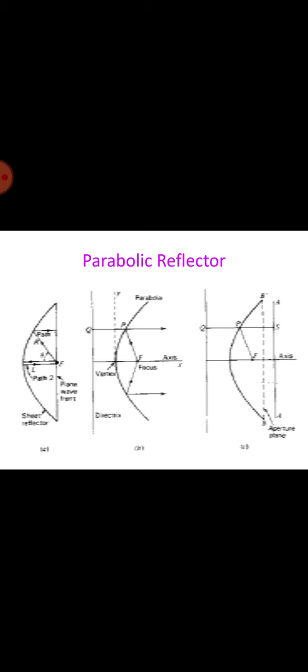The image of the focus is the directrix, and the reflected field along the line AA' appears as though it originated at the directrix as a plane wave. The plane BB' at which the reflector is cut off is called the aperture plane. A cylindrical parabola converts a cylindrical wave radiated by an in-phase line source at the focus into a plane wave at the aperture, or a parabola of revolution converts a spherical wave from an isotropic source at the focus.